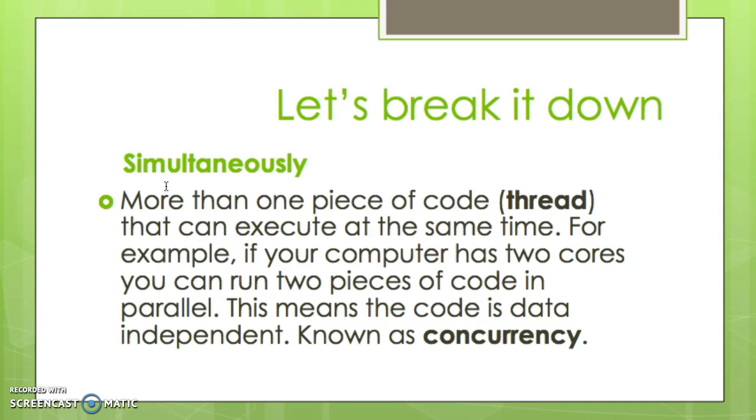You essentially have little CPUs within the bigger CPU that can all execute an instruction. So this means you can have several parallel tracks of code running at the same time. When you can run your code in parallel, this means they are data independent. They don't rely on data in the other pieces of code that are executing. And when they run in parallel like this, this is known as concurrency.